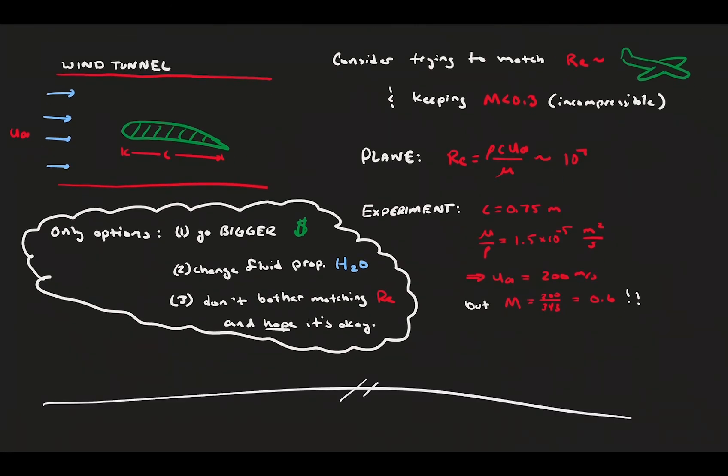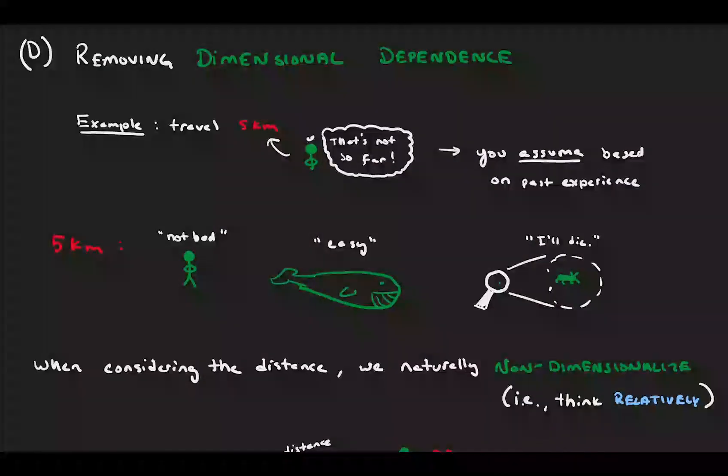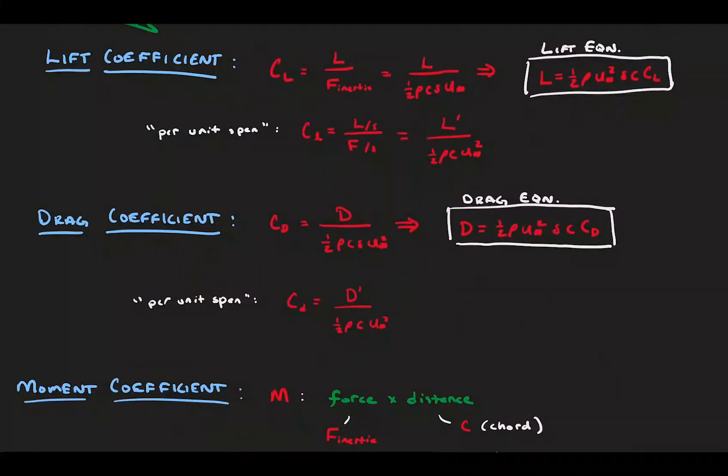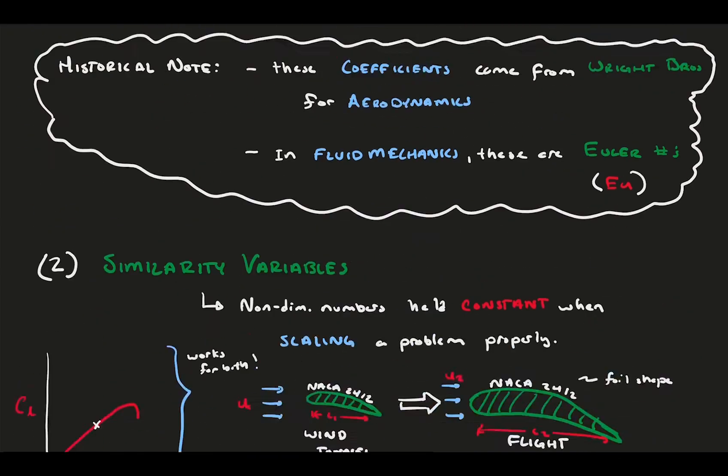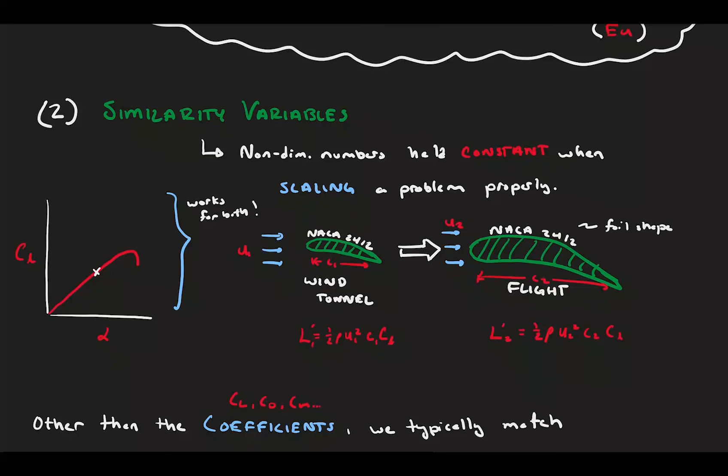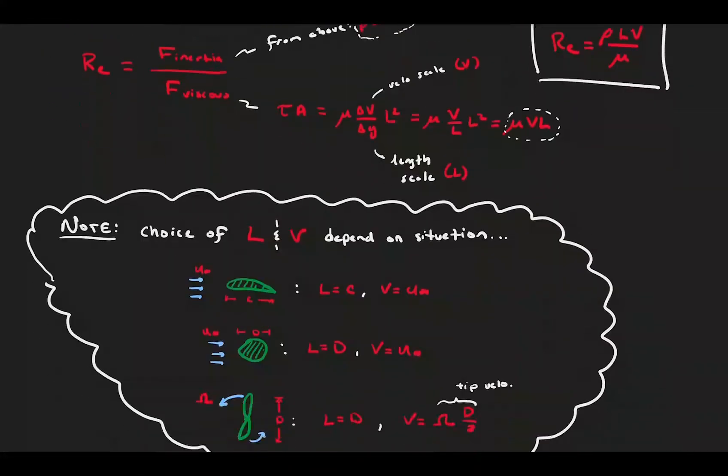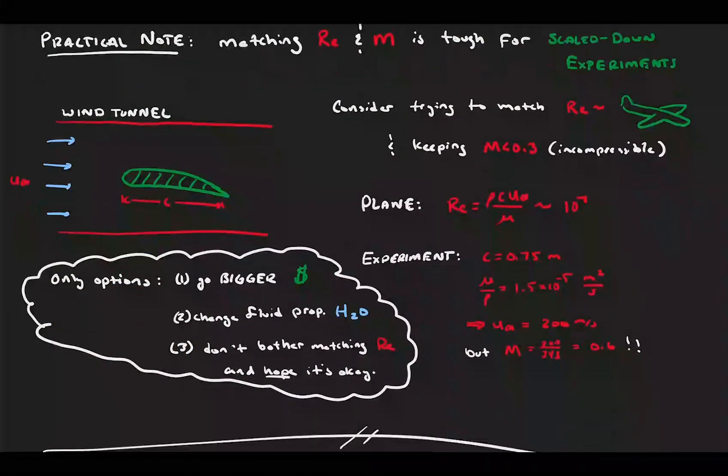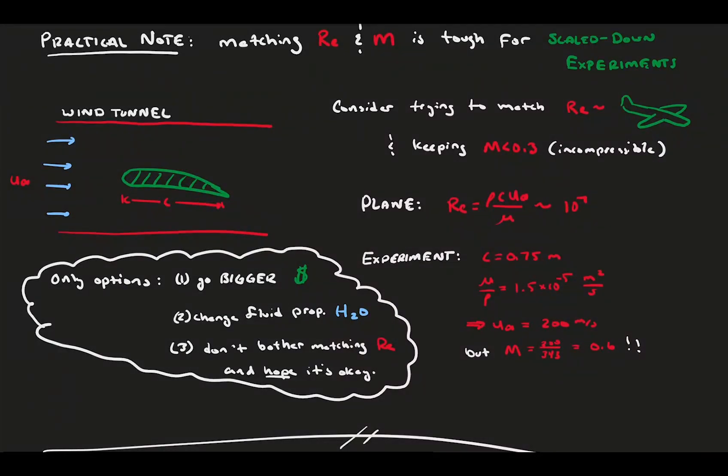Let's review. First, we use a simple non-fluids example to motivate thinking relatively and using non-dimensional numbers. We define that the flow lift, drag, and moment coefficients by comparing them to a reference force related to the fluid inertia. Then, we considered how we would use these non-dimensional numbers when scaling problems up or down, ensuring that the cases follow similarity. The two primary similarity variables in aerodynamics are the Reynolds number and the Mach number, which are often at odds with one another in application. And that's it for today. Thanks for sticking around and I hope you enjoyed it. See you next time.